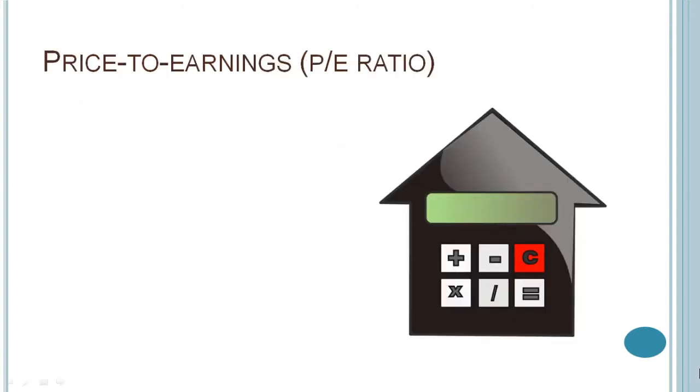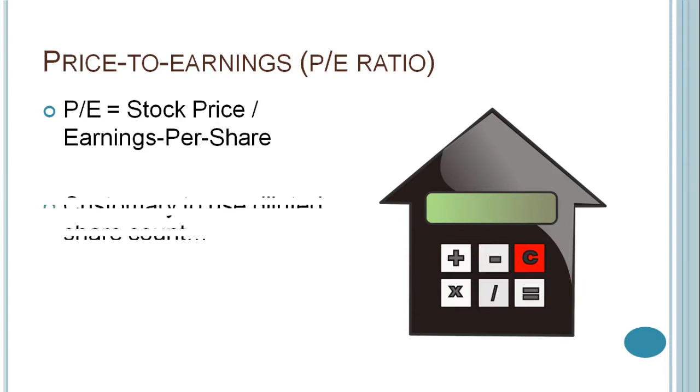The first is the price to earnings ratio. The P/E ratio is calculated as the stock price divided by earnings per share. Earnings per share in this case is simply calculated as net income divided by the diluted share count. Diluted share count basically represents all shares outstanding, plus any securities that can be converted into common shares.